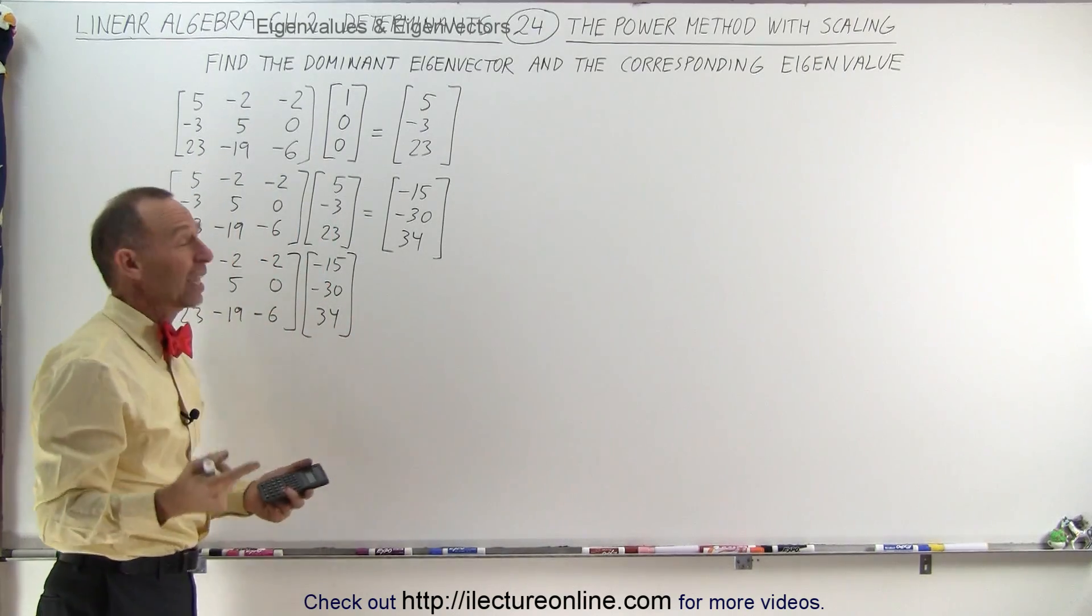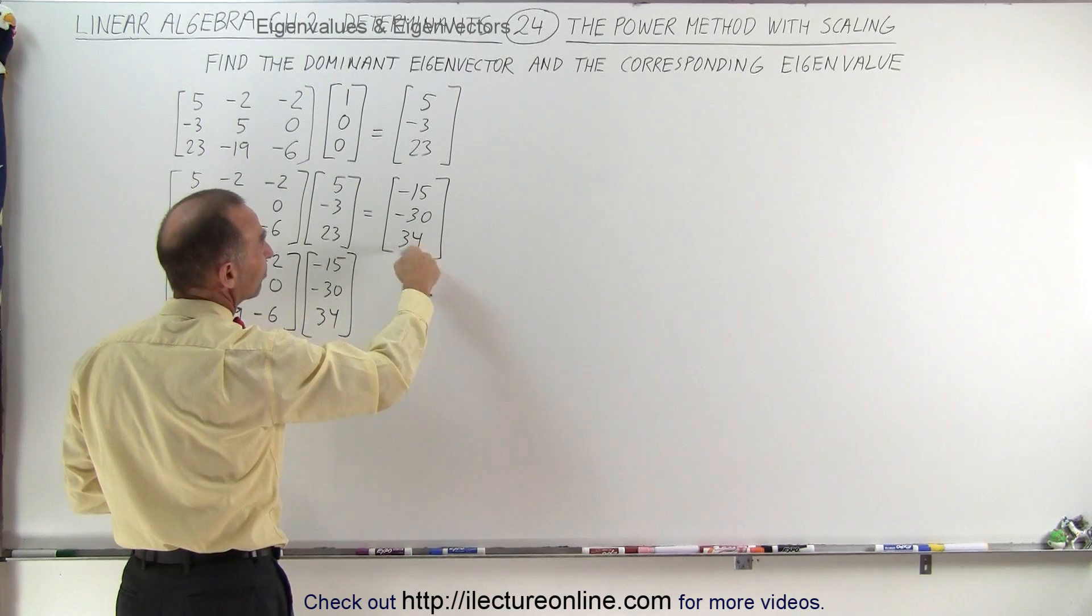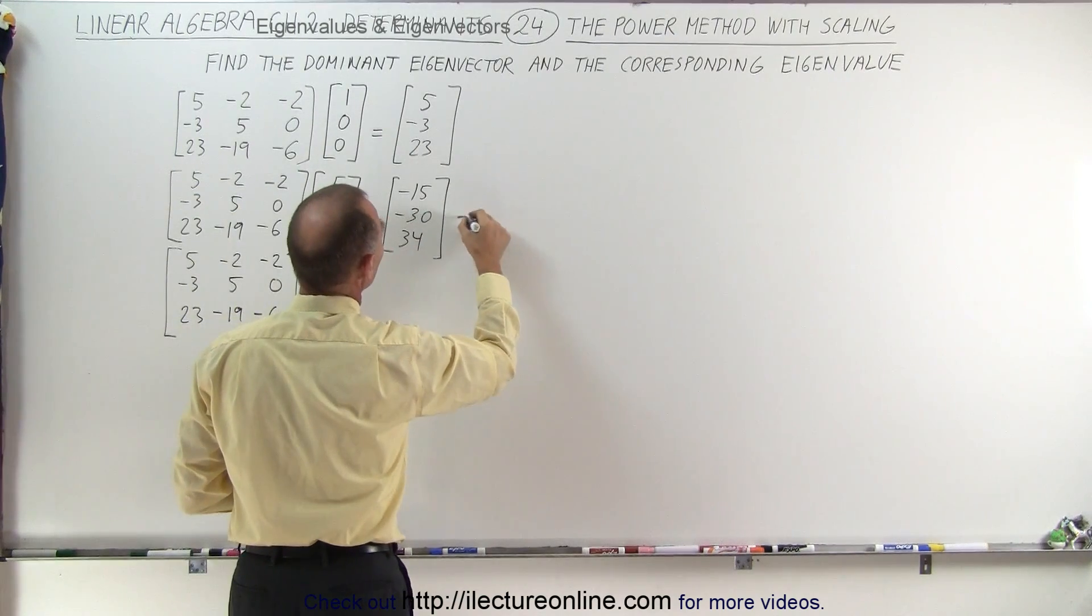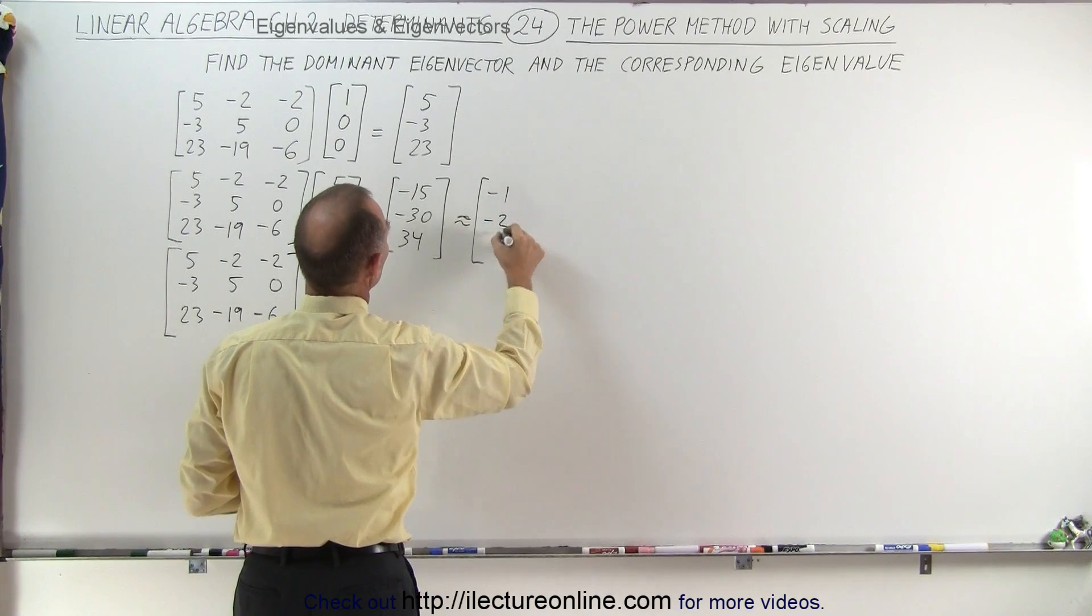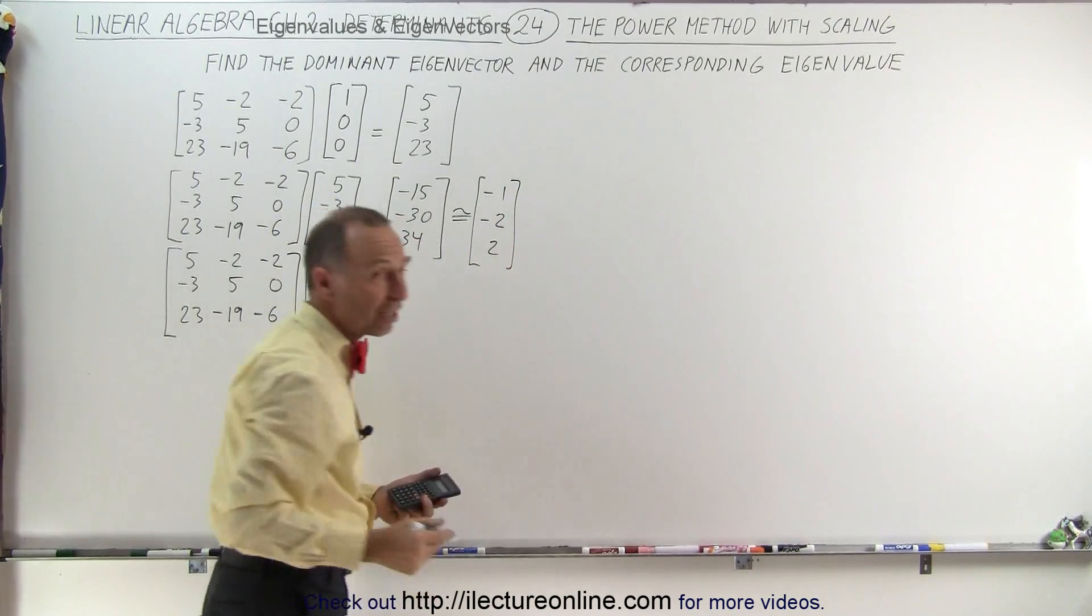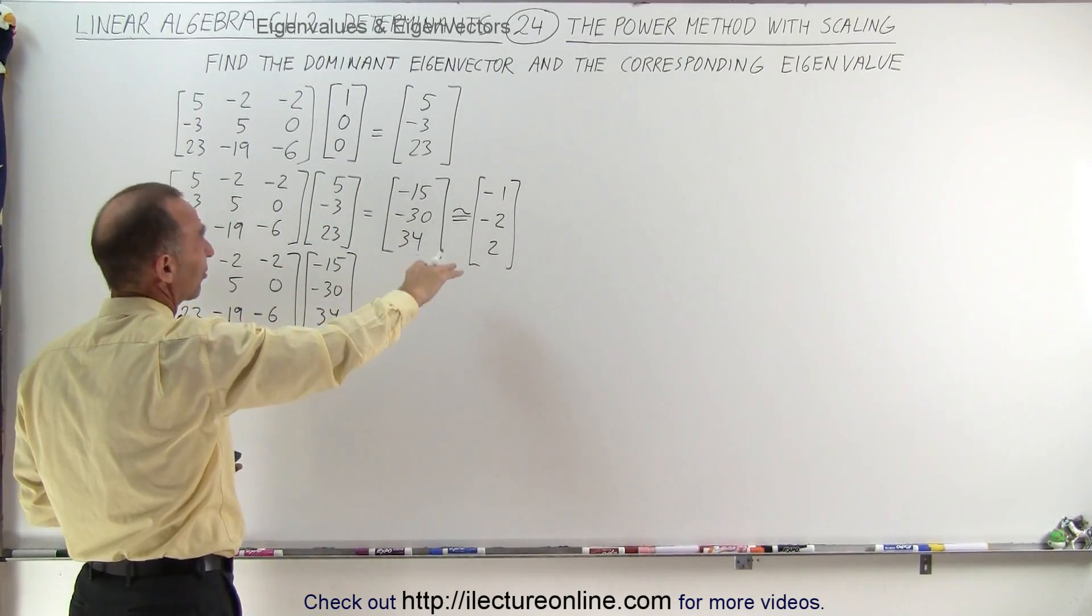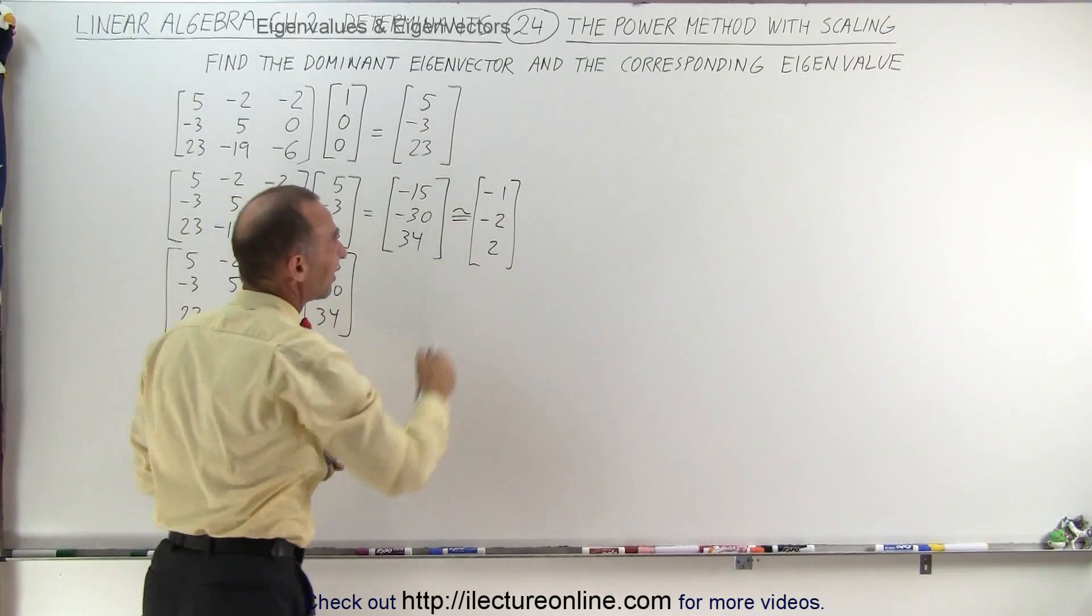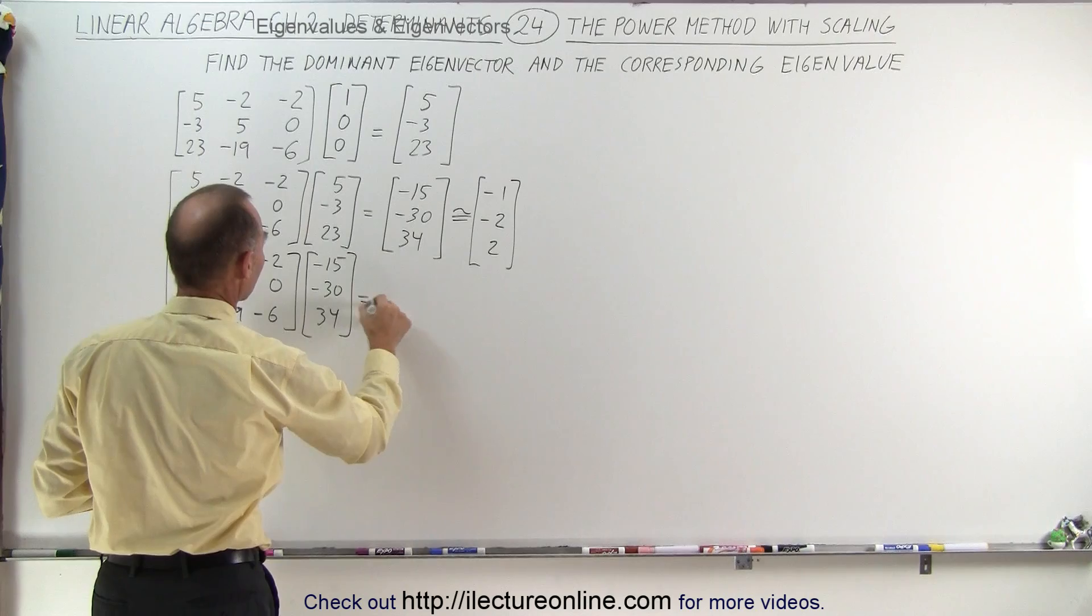And now we use this as a possible eigenvector. If you want to think about scaling, this is approximately a minus 1, a minus 2, and a plus 2. So at this point, I would say that's the approximate scaling factor. But since there's a mix of signs, we went from a plus to a minus. I wouldn't worry too much about scaling yet. Let's see what this one gives us.